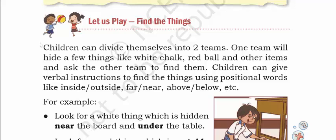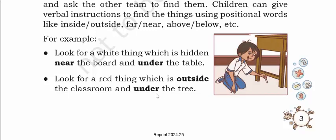Let us play 'Find the Things.' Children can divide themselves into two teams. One team will hide a few things like white chalk, red ball, and other items, and ask the other team to find them. Children can also give verbal instructions using positional words like inside, outside, far, near, above, below. For example: look for a white thing hidden near the board and under the table, or look for a red thing outside the classroom and under the tree.